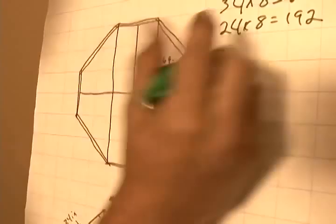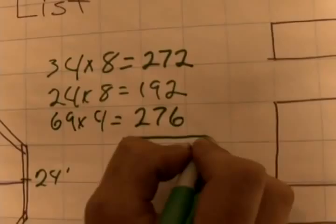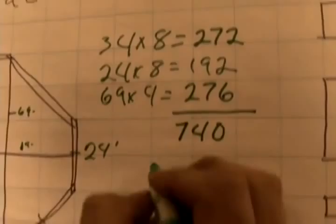Since we don't need to do this framework on the roof, this is just going to be sixty-nine inches times four, which equals two hundred and seventy-six. Now we'll add all these together, which gives us seven hundred and forty.